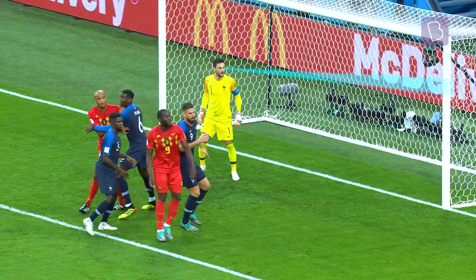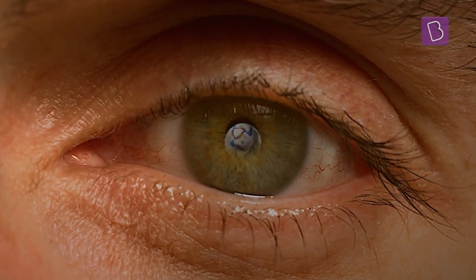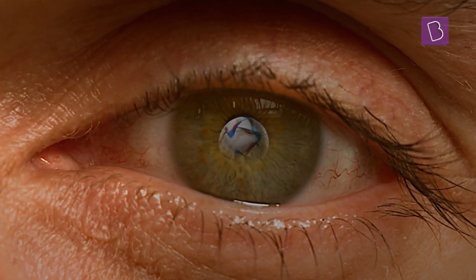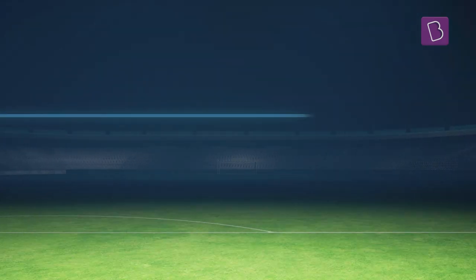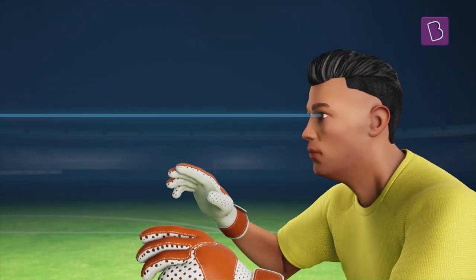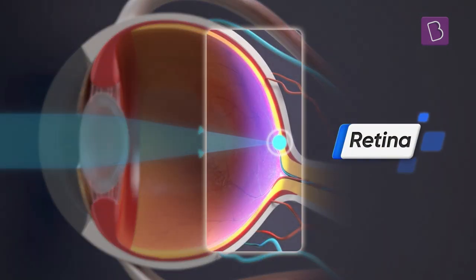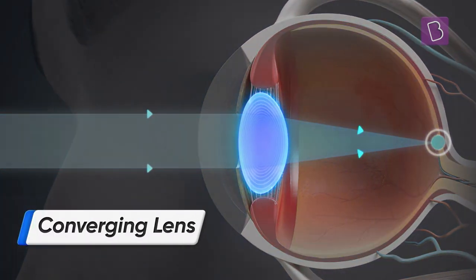From the moment the ball is kicked, the eye is always on the ball. Light rays reflect off the ball and enter the eye to focus on a light-sensitive layer on the back — the retina — thanks to its converging lens.